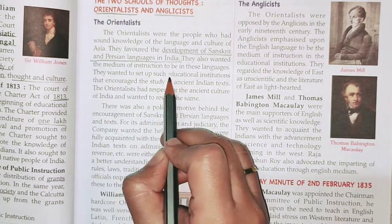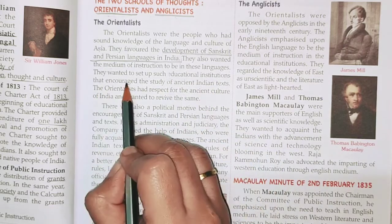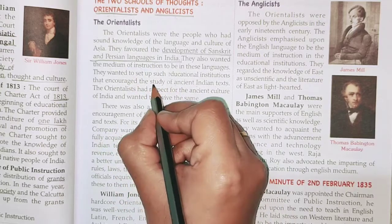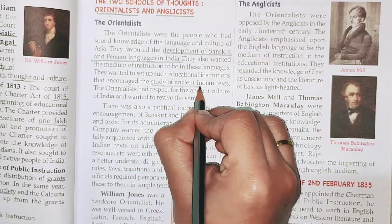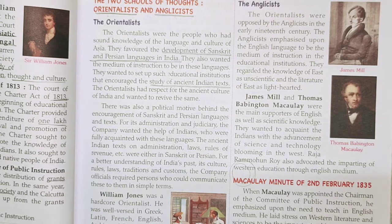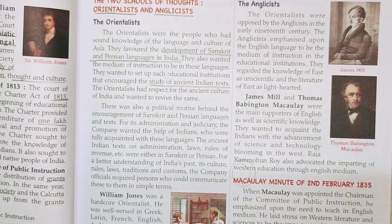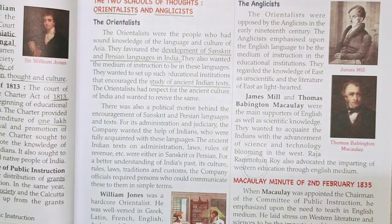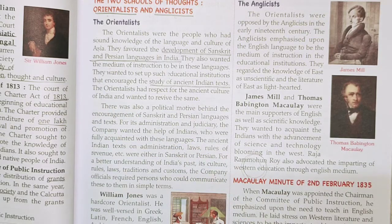The Orientalists wanted to set up educational institutions that encourage the study of ancient Indian texts — original historical books like the Vedas and other texts. They had great respect for ancient Indian culture and wanted to revive and promote it. They were firmly in favour of Indian culture and Indian languages.